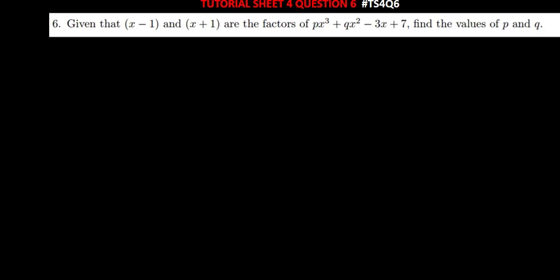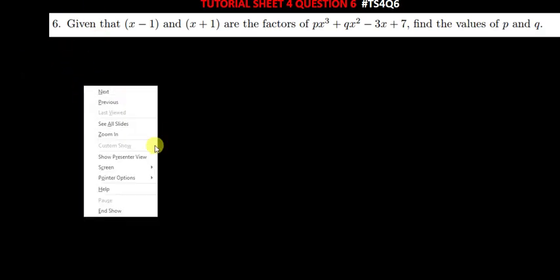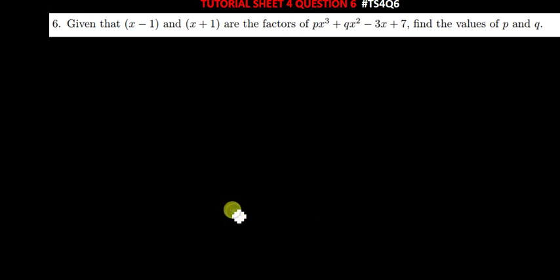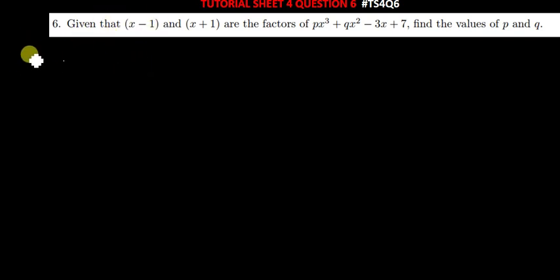This question is simple and straightforward. Whenever you are finding a factor, or when you've been told that a certain expression is a factor of a given function, what you do is equate that factor to 0. So for instance, x plus 1 equals 0, or let me start with x minus 1.